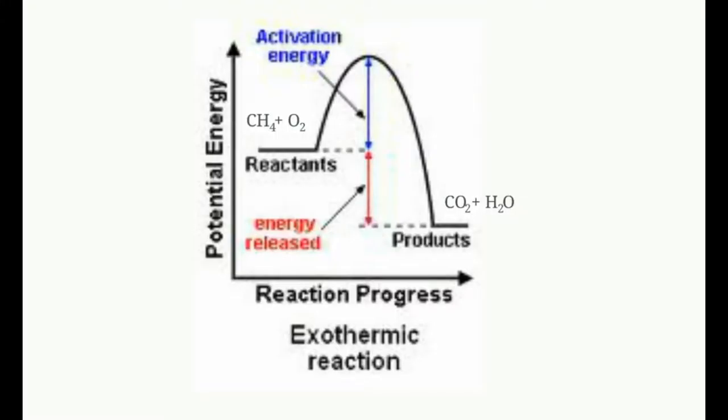That little blue line on the reaction diagram is called activation energy. When you mix gas from the Bunsen burner with air, does it automatically react? No — you have to put a flame or a spark to it. That spark is the activation energy. Once it reacts, it takes off. It's that one little push to get things started.